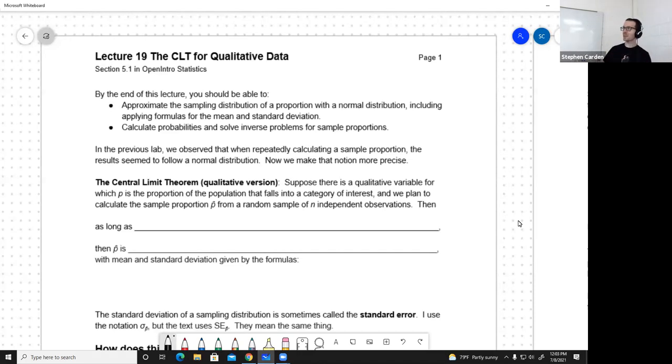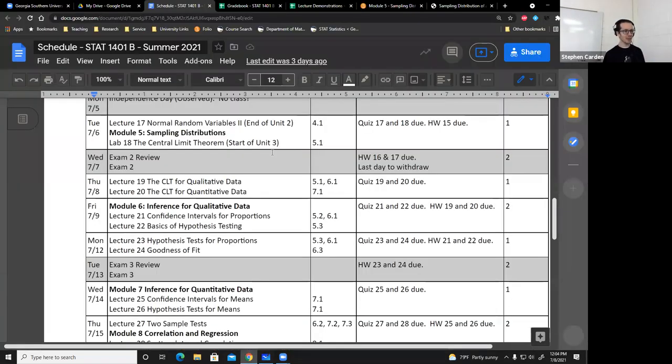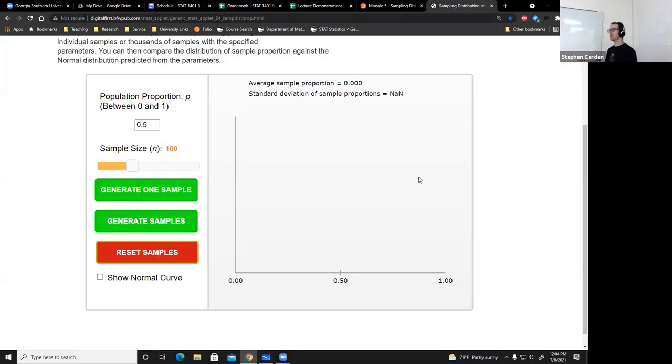So we're going to, in lectures 19 and 20, put a little bit more math and some formulas behind that. But let me start by doing kind of a speed run of what lab 18 looked like, especially for proportions. So here I've got an applet. I can decide what I want a population proportion to be. Let's make it 0.3. Then I can pick a sample size, and it will generate one sample of 100 observations out of this population. And it will calculate the proportion in the sample that are in the category of interest.